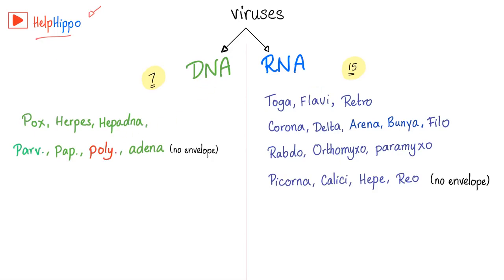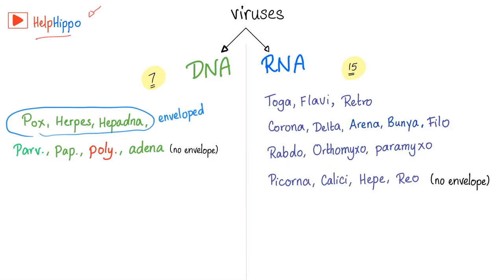Help Hippo has a brilliant song to help you remember DNA and RNA viruses. DNA viruses: pox, herpes, hepadna, parvo, papova, adena — seven total. The first group is enveloped; the second line has no envelope, making them non-enveloped. RNA viruses are 15: Toga, Flavi, Retro, Corona, Delta, Arena, Bunia, Filo, Rhabdo, Orthomyxo, Paramyxo, Picorna, Calici, Hepa, and Reo. The last line is non-enveloped — also known as naked viruses.